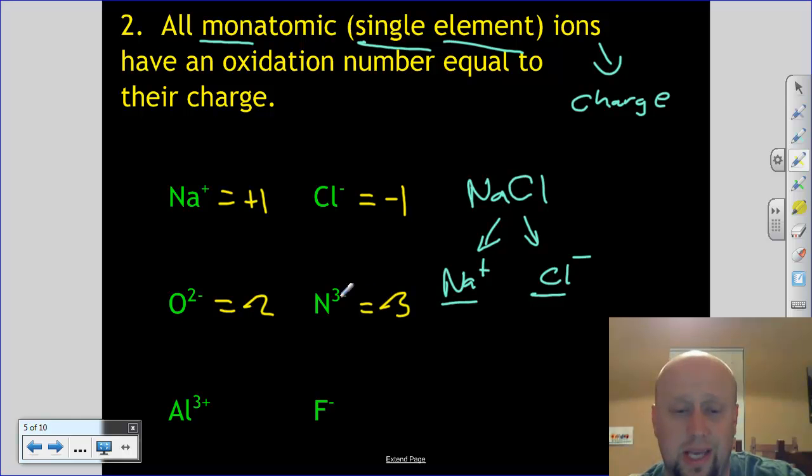And you'll notice again that I'm switching up this sign, putting the sign first, because that's technically the way it should be. So down here, aluminum's plus three. Fluorine is negative one. Monatomic ions, oxidation number is whatever their charge is.